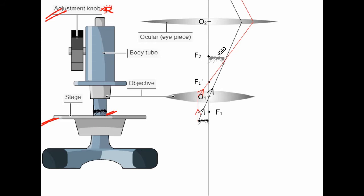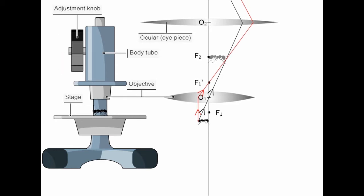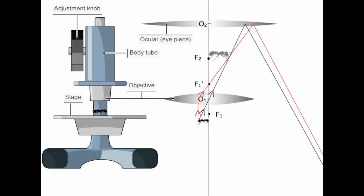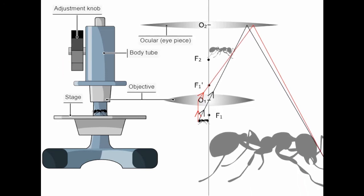If you take this image — which is acting as a virtual object — and move it into this region, a magnified image will be formed. By varying the position of the image, you can observe that you are getting one magnified image of the object.